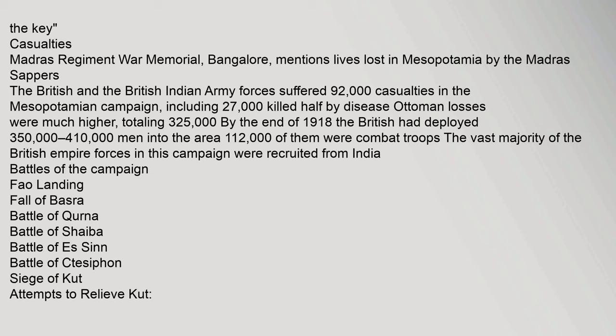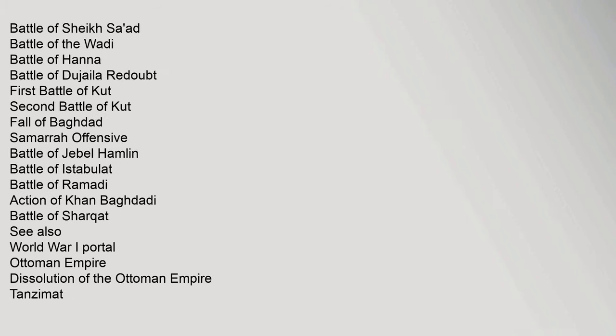Major battles of the campaign included: the FAO Landing, Fall of Basra, Battle of Kurna, Battle of Shaiba, Battle of Es Sinn, Battle of Ctesiphon, Siege of Kut, attempts to relieve Kut, Battle of Sheikh Saad, Battle of the Wadi, Battle of Hannah, Battle of Dujaila Redoubt, First and Second Battles of Kut, Fall of Baghdad, Samara Offensive, Battle of Jebel Hamrin, Battle of Istabulat, Battle of Ramadi, Action of Khan Baghdadi, and Battle of Sharkat.